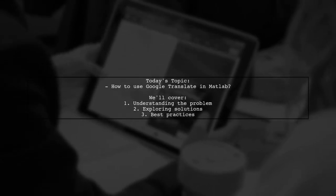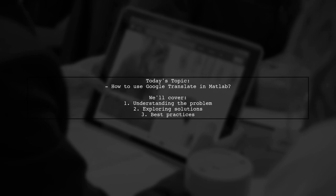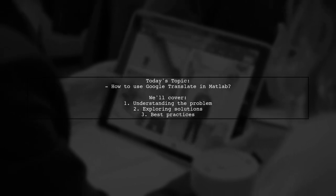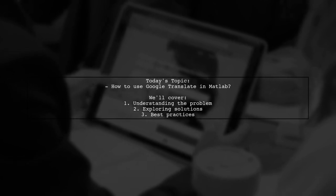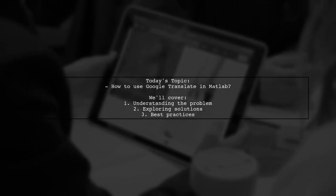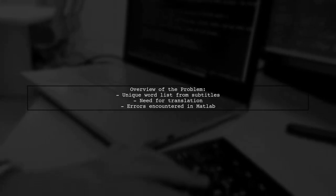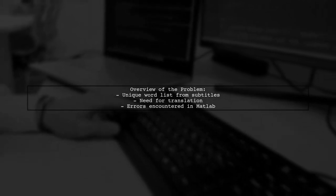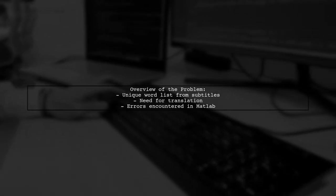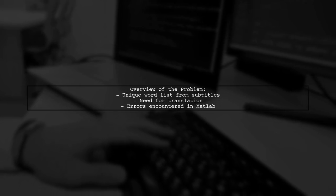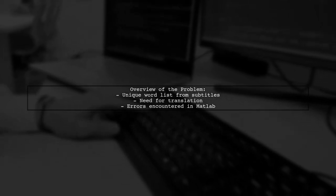Welcome to our Tech Explainer video. Today we're tackling a question that many programmers encounter when working with language processing. Our viewer is looking to enhance their movie watching experience by translating unique words from subtitle files using MATLAB. The viewer has successfully created a list of unique words from a movie subtitle file and wants to translate them into their language. However, they're facing challenges using Google Translate within MATLAB, particularly with error messages like 403 and 400. Let's dive into how we can solve this issue.